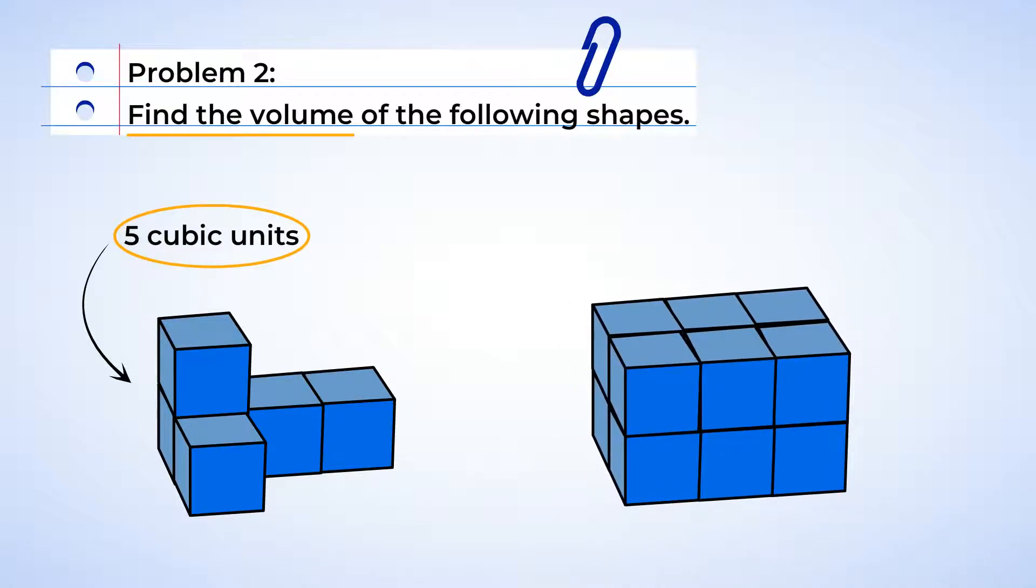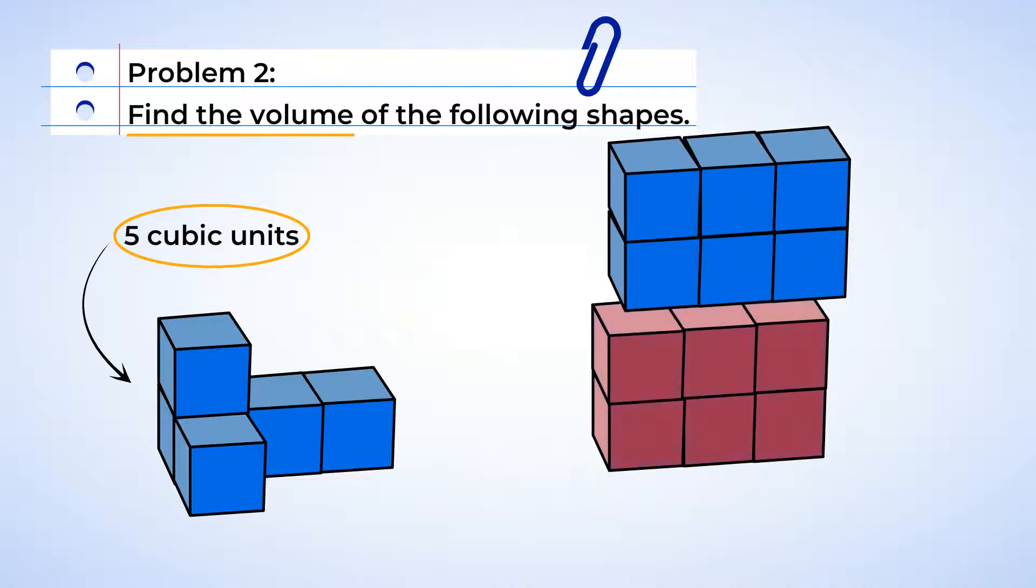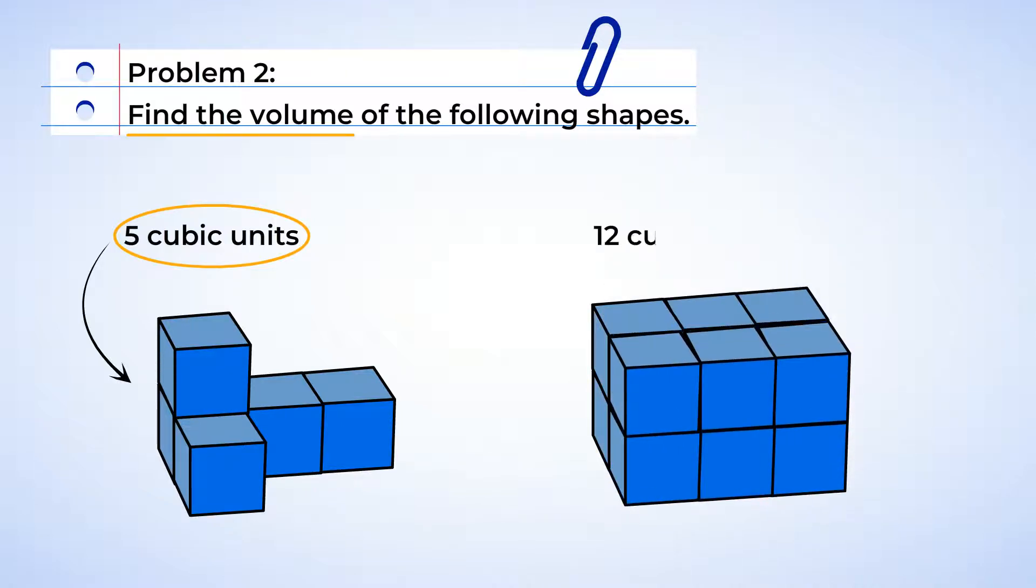Now let's look at the next shape. When you're working with three-dimensional shapes, sometimes you can't see all the blocks. You can assume that these are all solid objects and that there aren't any missing units in the back. Now this shape has six in front and six in the back, and that's a total of 12. So this shape has a volume of 12 cubic units.